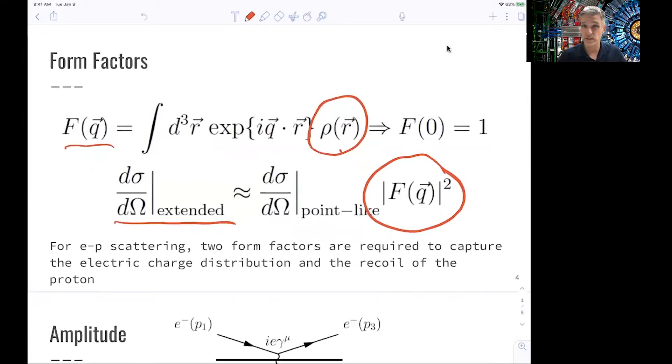In electron-proton scattering, there's another point. It's not just the extension of the proton, but also the fact that the proton carries recoil. So we need to use two form factors in order to describe the cross-section fully.